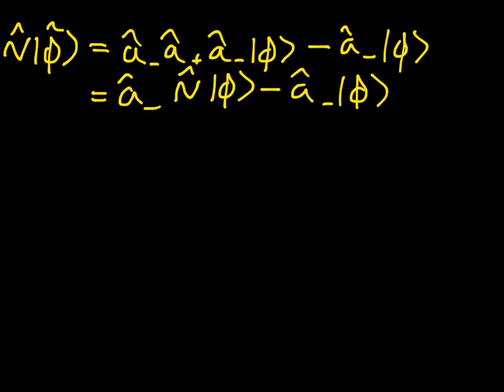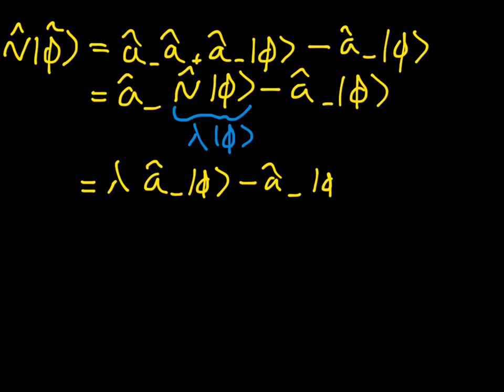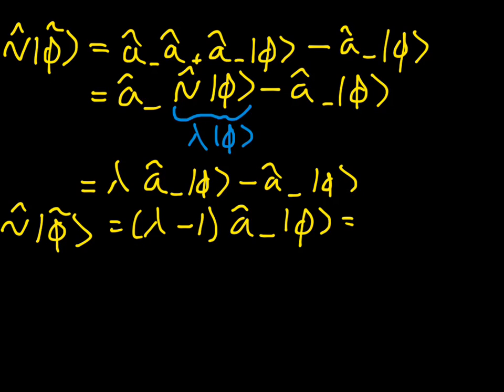But we know what n-hat acting on phi is. That is just lambda phi, because that's how we defined it in the beginning. So we can write that n-hat acting on phi tilde is equal to lambda, a-minus phi, minus a-minus phi. In other words, n-hat on phi tilde is equal to lambda minus 1, a-minus phi, which is just lambda minus 1, phi tilde.